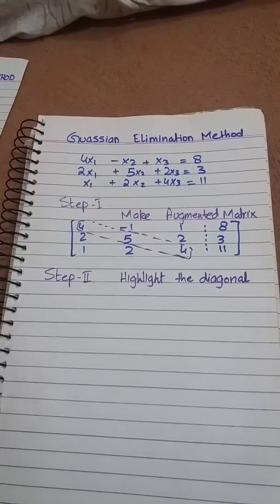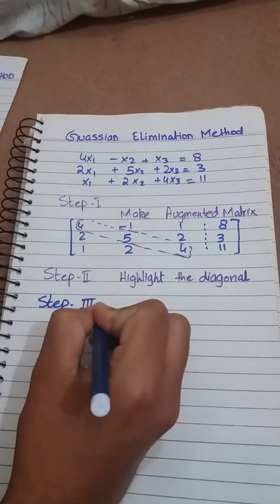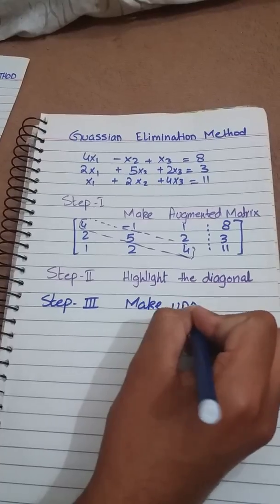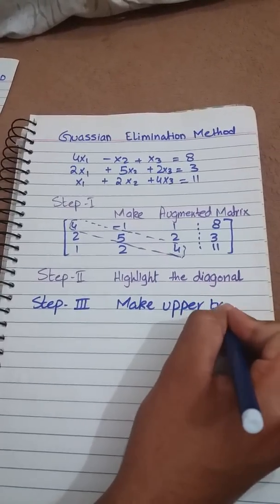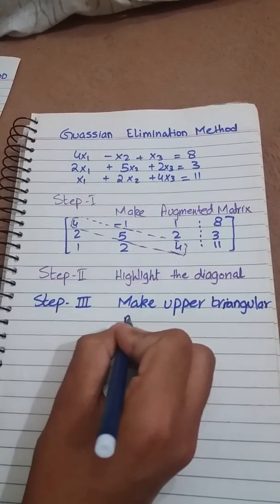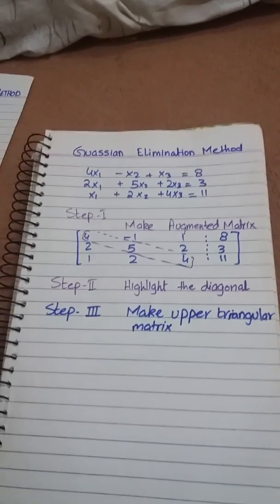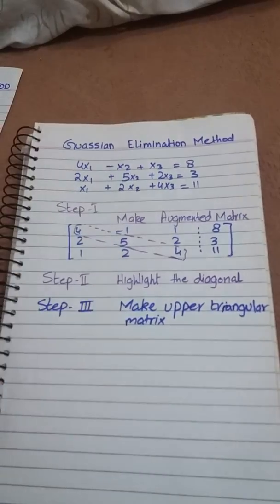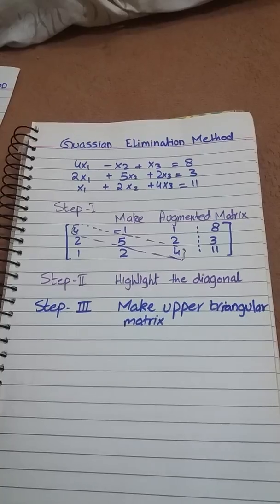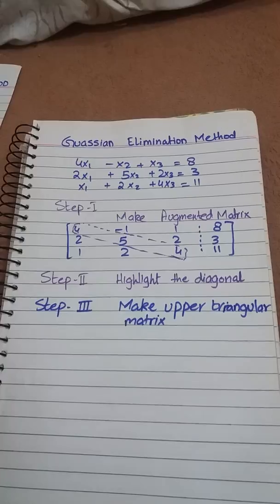Step three: make upper triangular matrix. Upper triangular matrix is that matrix in which the elements below the diagonal is zero. To make upper triangular matrix we have to perform some row operations as follows.